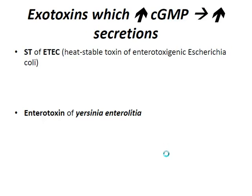Exotoxins which increase cyclic GMP: the ST of ETEC, which is the heat-stable toxin of enterotoxigenic E. coli, and the enterotoxin of Yersinia enterocolitica. Those are the two that increase cyclic GMP.